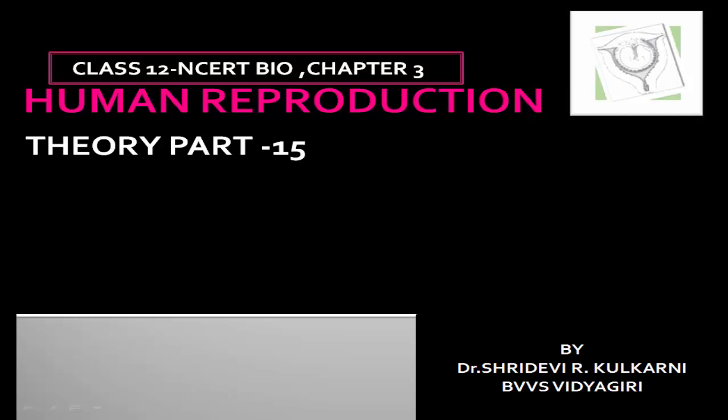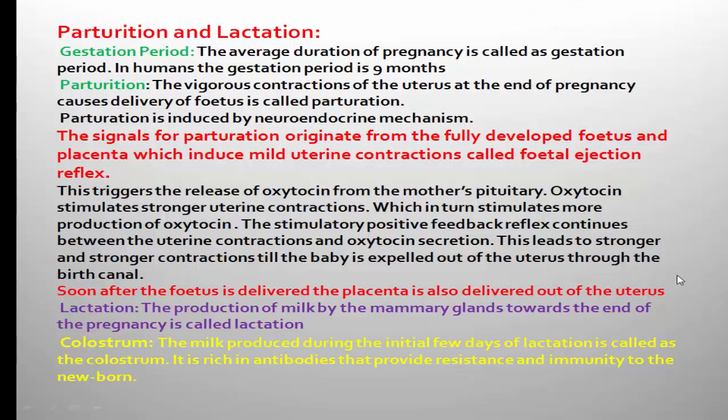Hello dear students, this is the last bit of the chapter human reproduction, so let us go for the remaining terms and processes — parturition and lactation. Before this, you have studied about the process of fertilization in humans, how the zygote gets converted into blastocyst, what is implantation, what is placenta.